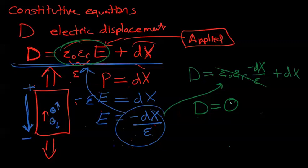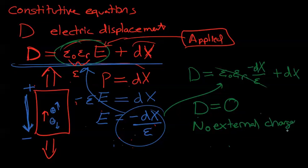What does D equals 0 tell us? No external charges added. So while polarization can exist when the material is not under an external field, meaning you're not hooking up any leads to the electrodes on the top and bottom,